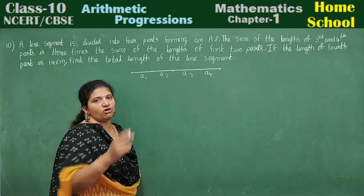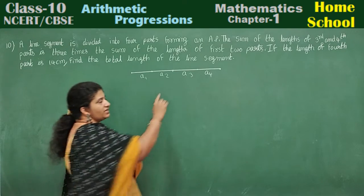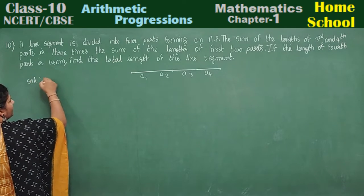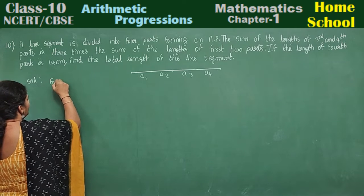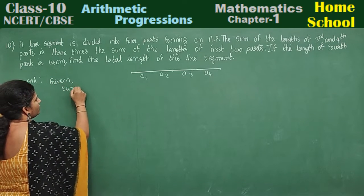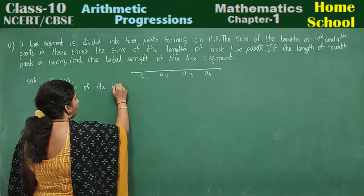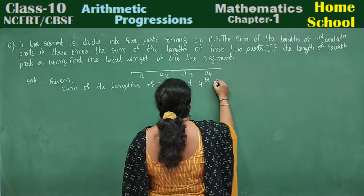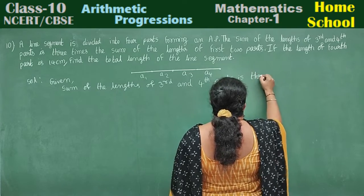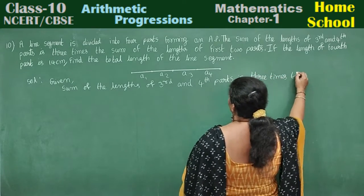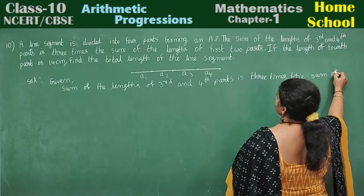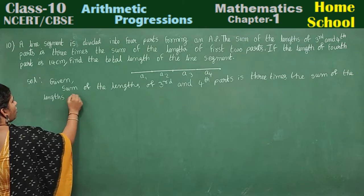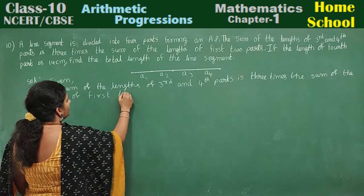The sum of the lengths of the third and fourth part — this length plus this length — is equal to three times the sum of the lengths of the first two parts. So let us start the solution. Given: sum of the lengths of third and fourth part is three times the sum of the lengths of first two parts.